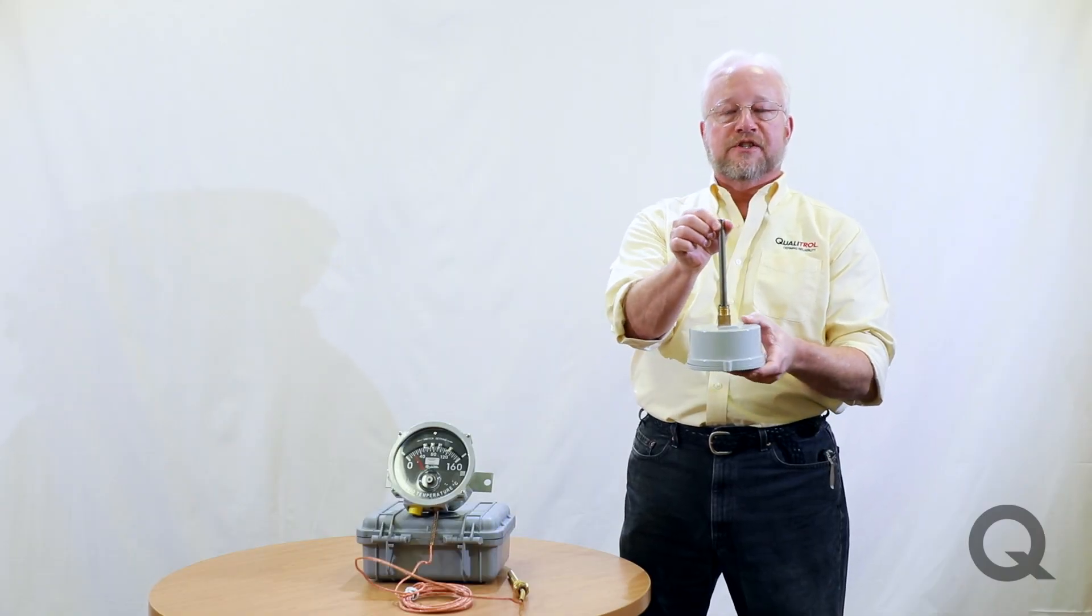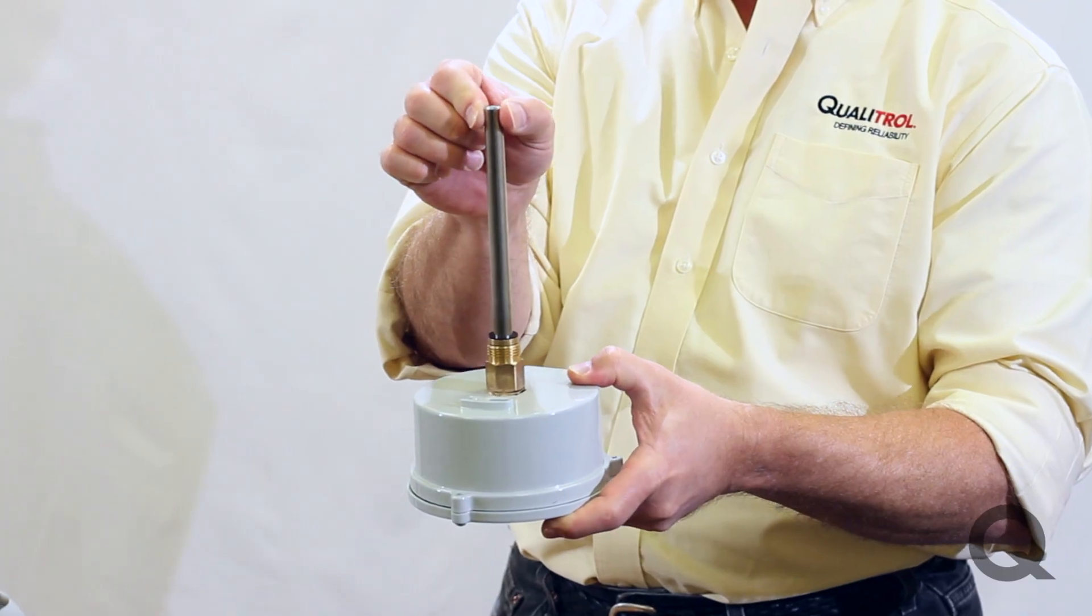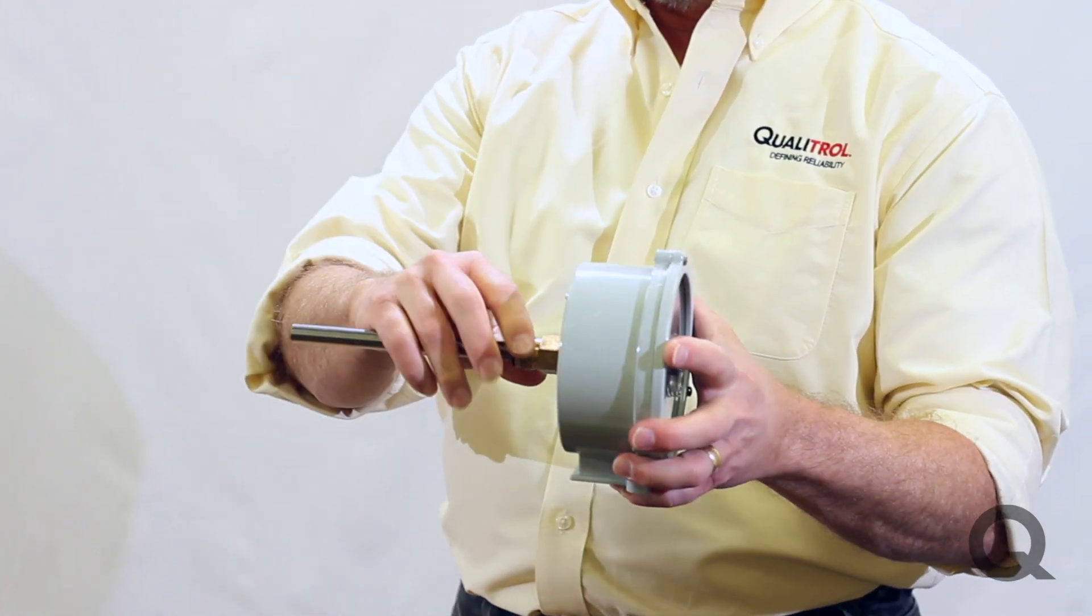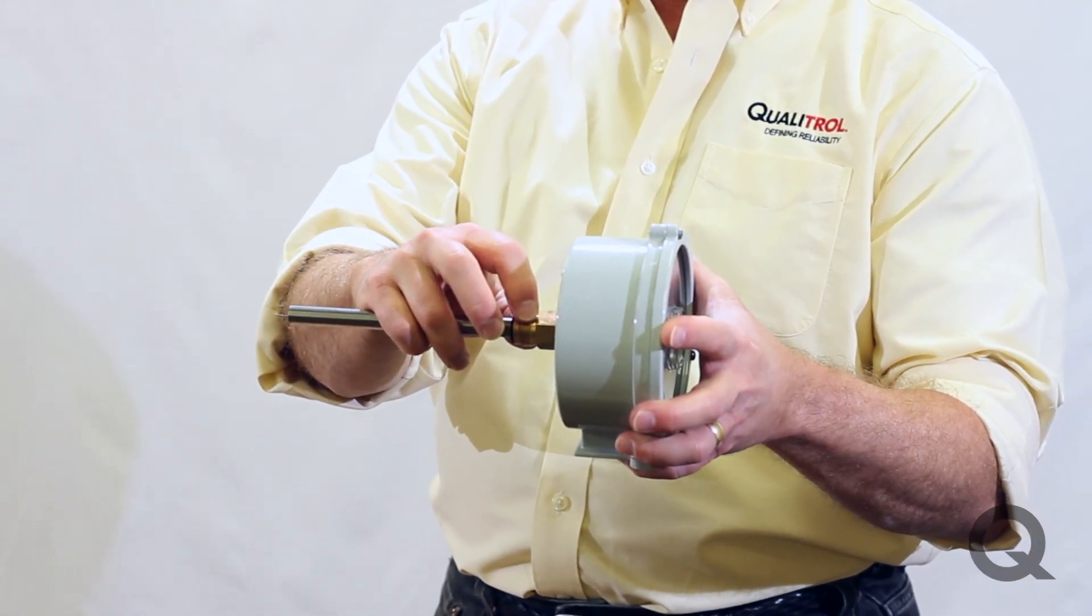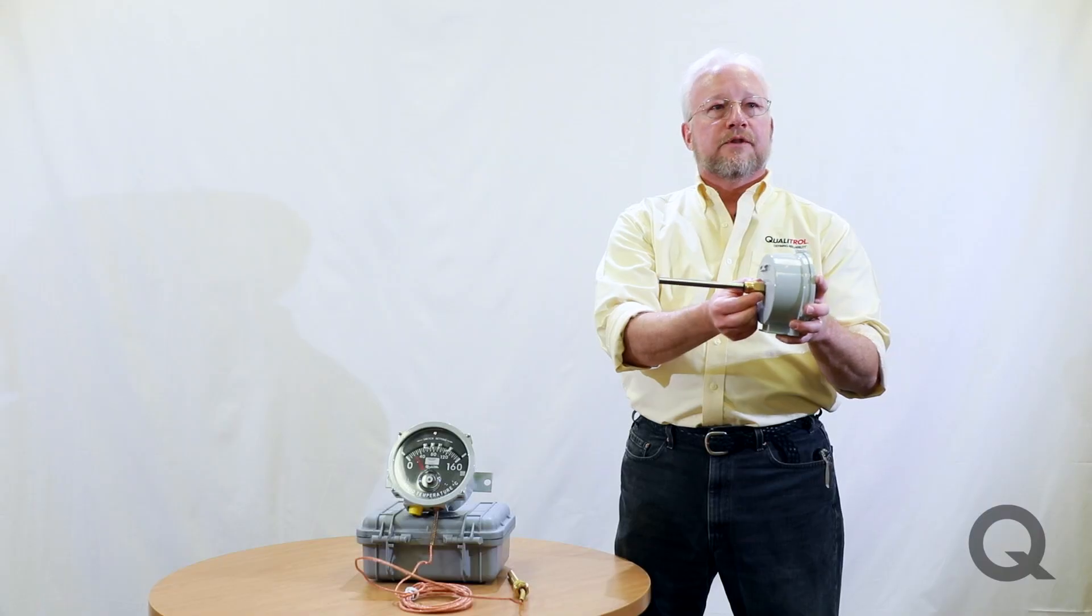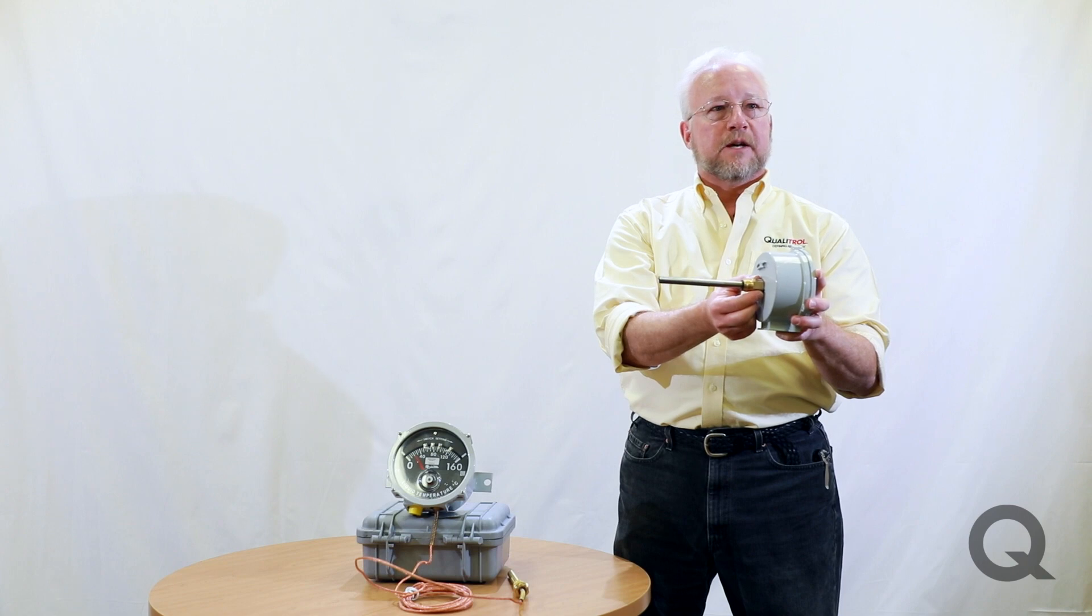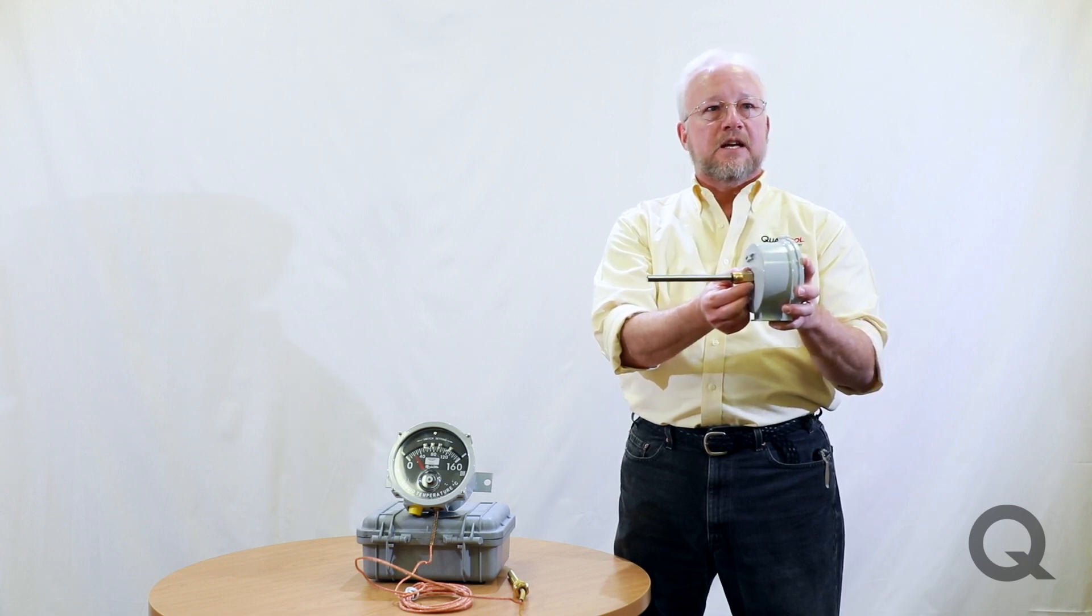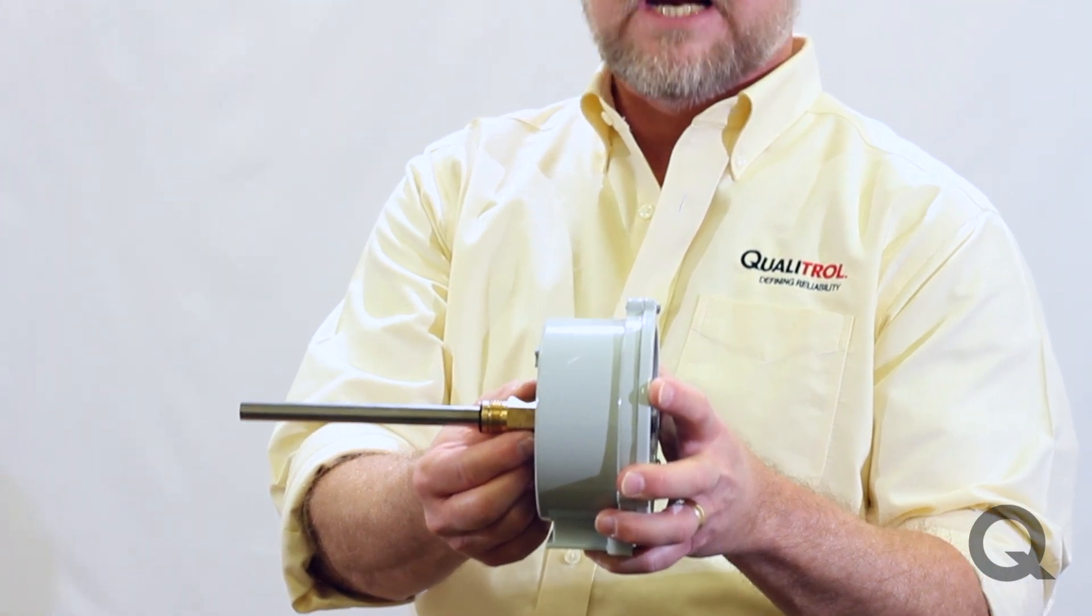The probe diameter is exactly what it says it is. It's the outside diameter of the probe itself. The threads are a little more interesting because you need to know the diameter and the pitch. Typically you're talking 3/8-18 NPT threads or 7/8-14 UNF threads.